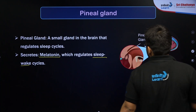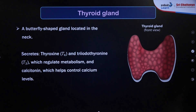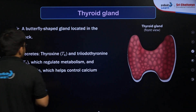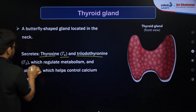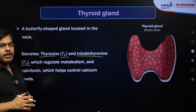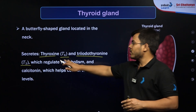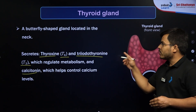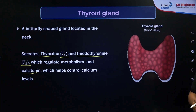The next gland is the thyroid gland, a butterfly-shaped gland present in the neck region. This gland releases three types of hormones: thyroxin (T4) and triiodothyronine (T3) — these two are very important; hyposecretion of thyroxin leads to a common disease called goiter. The third hormone is calcitonin, which regulates calcium levels in the blood.